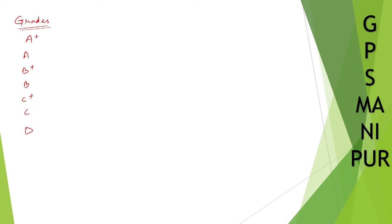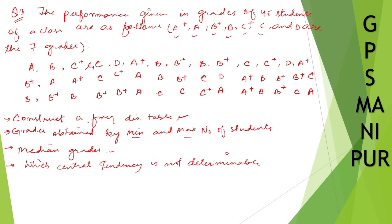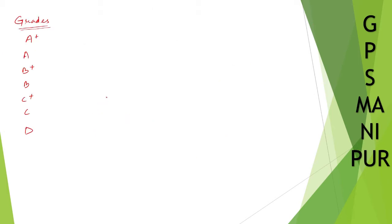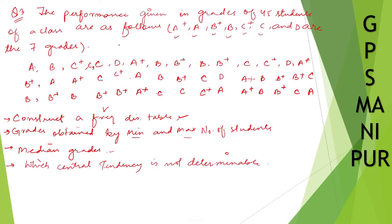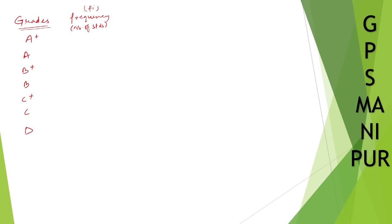Now for the frequency distribution table, frequency means number of students. How many students got A+? One, two, three, four, five, six — so there are six students who got A+.